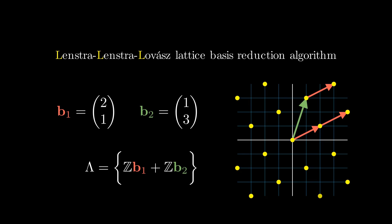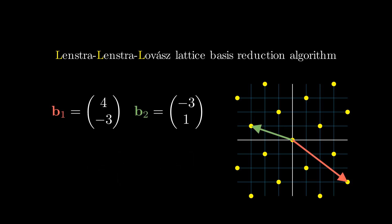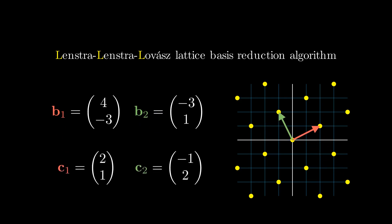Lattices don't have just one basis. For example, a basis where b1 equals (4, -4, -3) and b2 equals (-3, 1) still creates the same lattice — any integer combination of these vectors produces the same set of points. The reduction part of LLL takes these basis vectors and finds a new set of basis vectors that is much shorter. One of the guarantees of LLL is that the new basis vectors are short, meaning their magnitude is small, roughly as short as you can get.